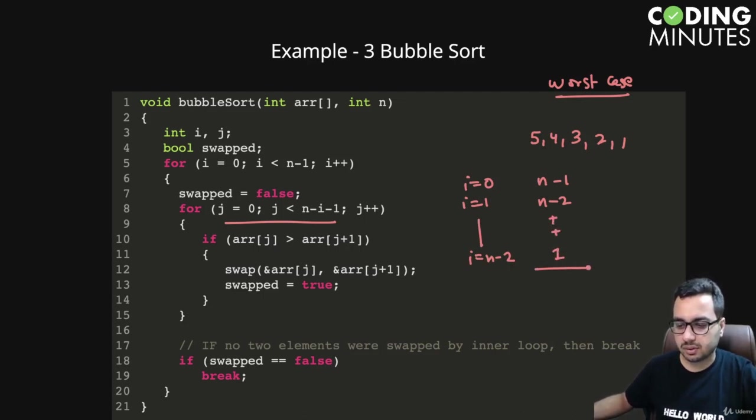You can see it forms this series. If I talk about the total work we're going to do, this work is constant, this work is also constant. Effectively, these two loops are going to work for order of n squared time.